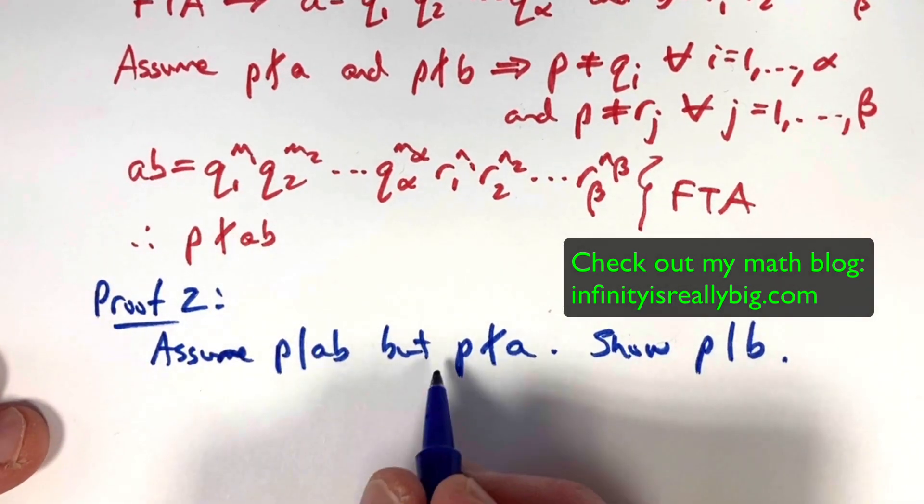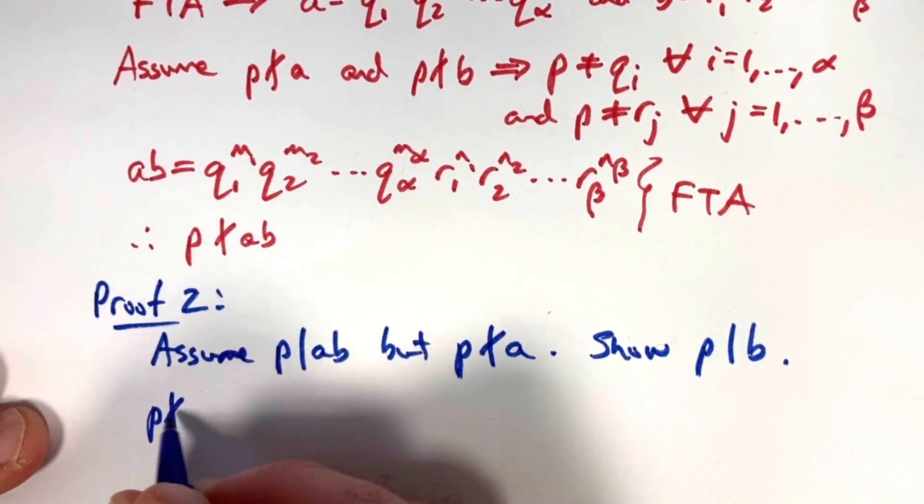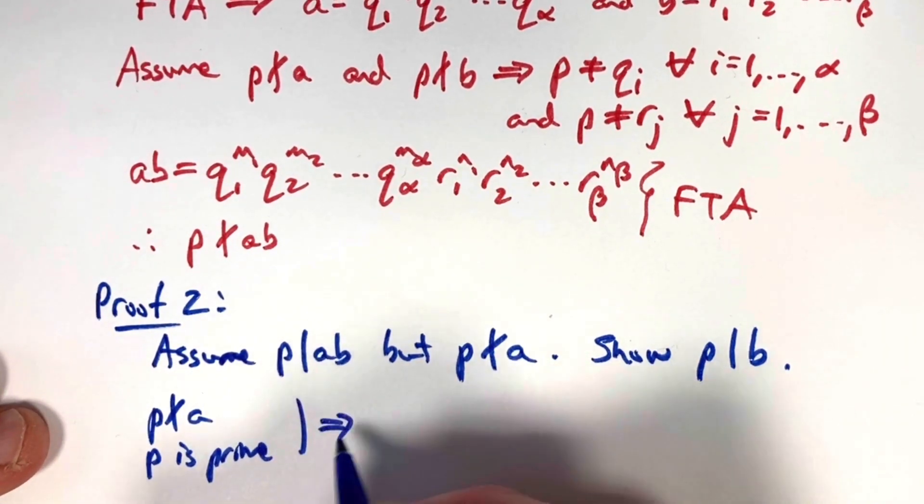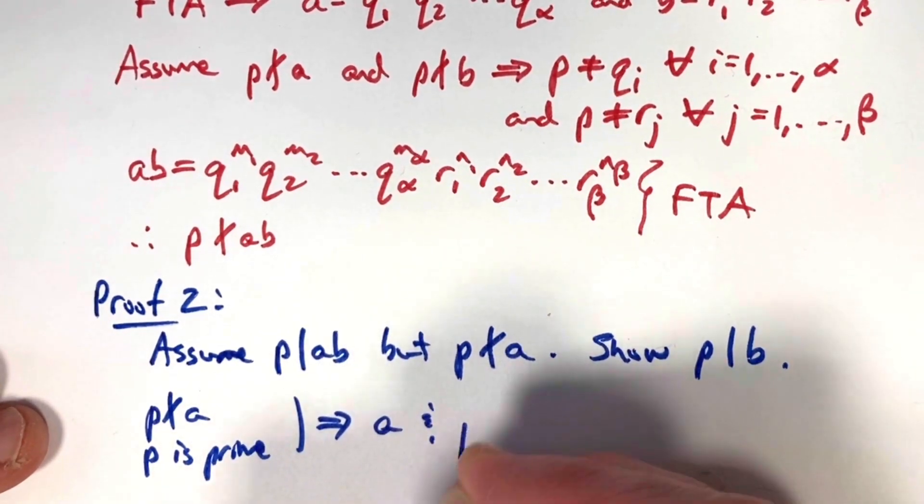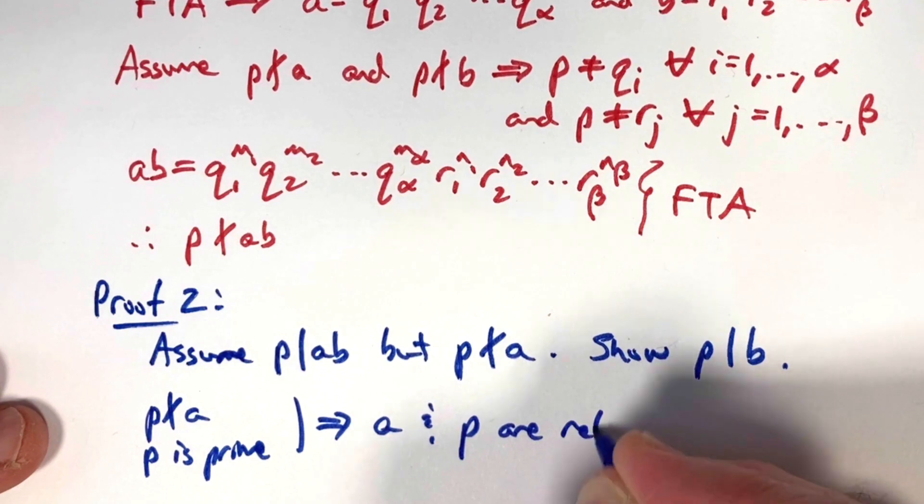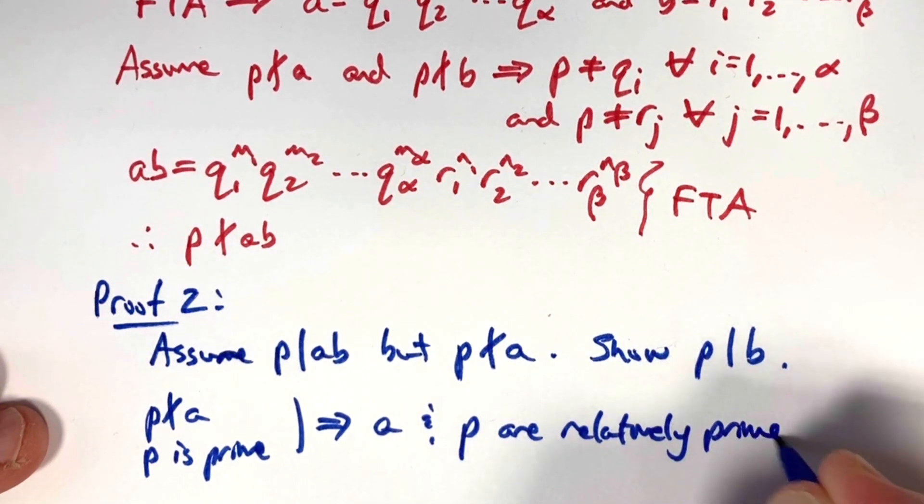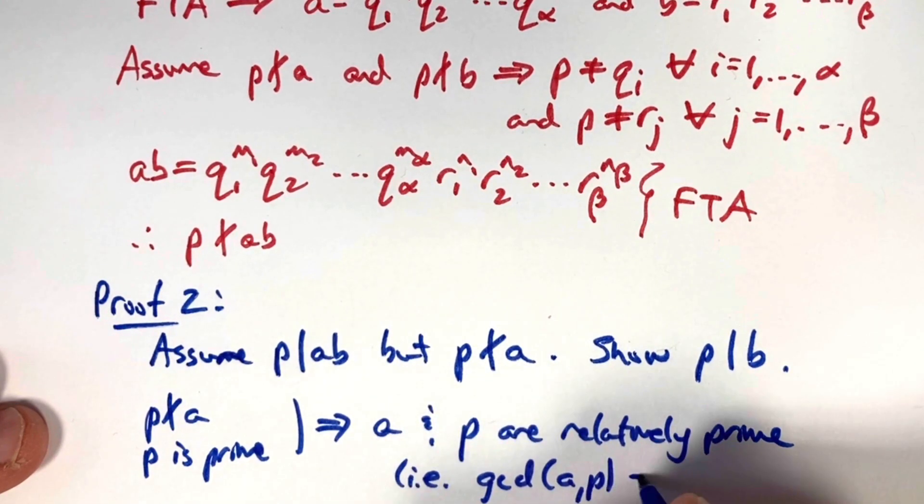The fact that p does not divide a and the fact that p is prime, implies in fact that a and p are relatively prime or co-prime. a and p are relatively prime. Sometimes people call that co-prime. In other words, the GCD of a and p equals one.